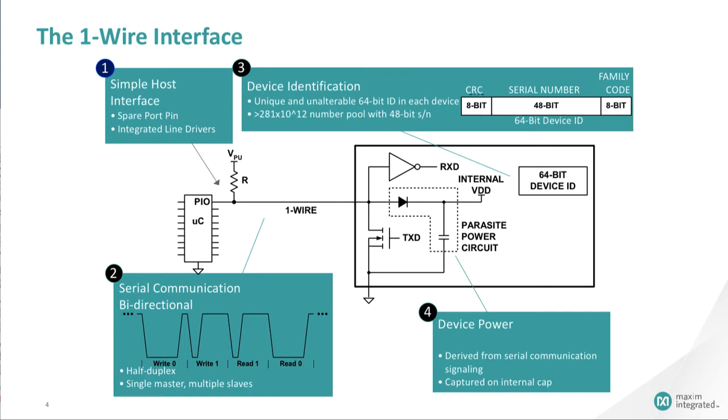One-wire devices derive their power through the use of an internal capacitor, which is charged while the line is in the idle high state. For most parasitic-powered one-wire devices, the minimum operating voltage is 2.8 volts.